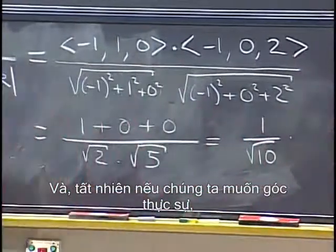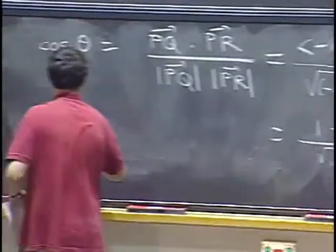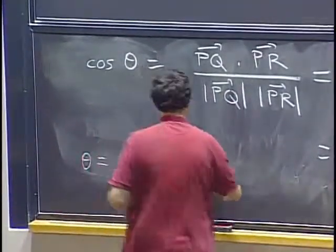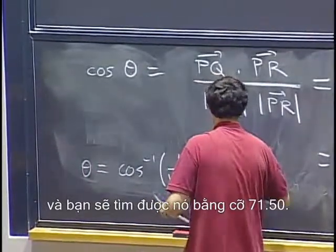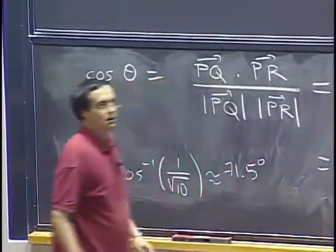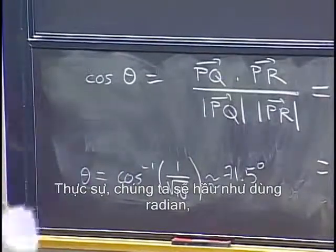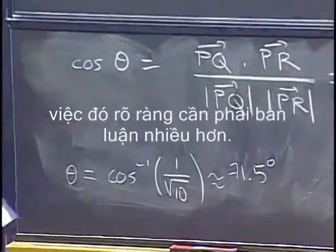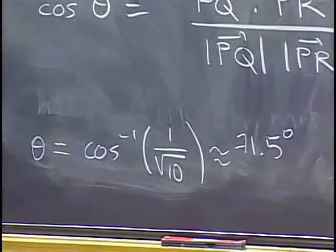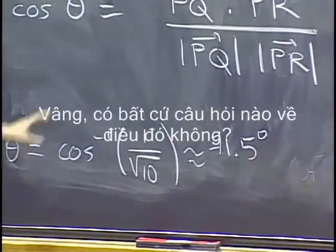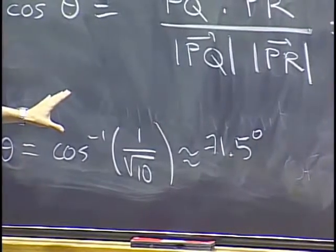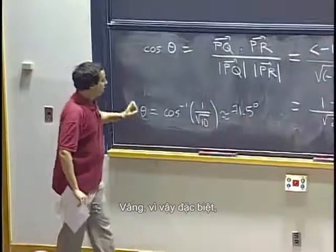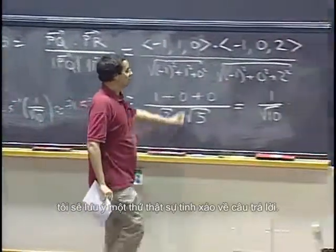OK? That is the cosine of the angle. And of course if we want the actual angle, well, we have to take a calculator, find the inverse cosine, and you will find that it is about 71.5 degrees. Actually we will be using mostly radians. But for today, that is certainly a more speaking answer. OK, any questions about that?